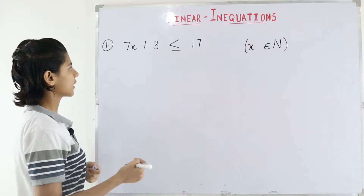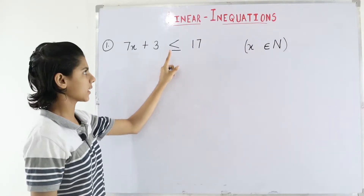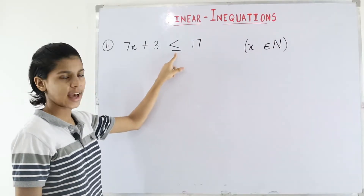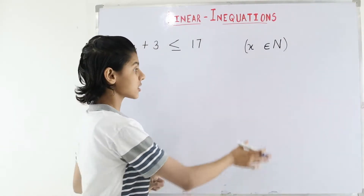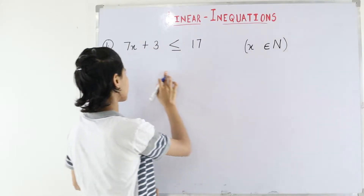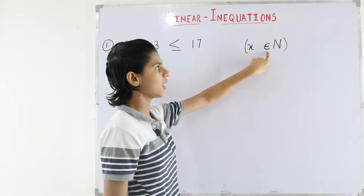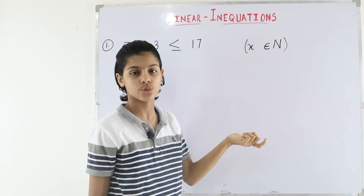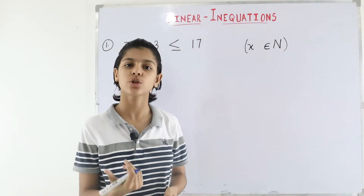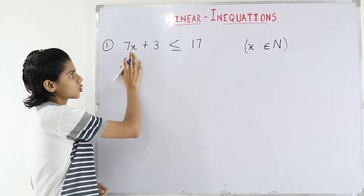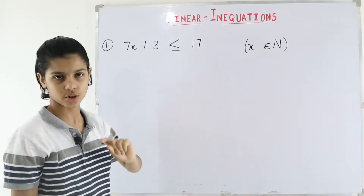The first question is: 7x plus 3 is less than or equal to 17. This is the less-than-or-equal-to sign. x belongs to N, where N is natural numbers — that is, x is a natural number. We need to find the value of x.